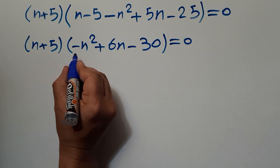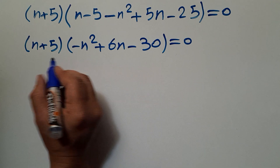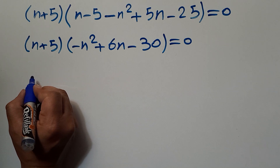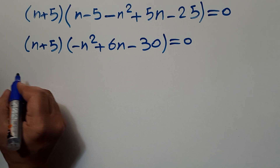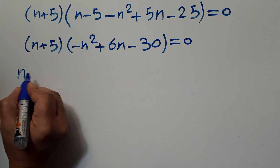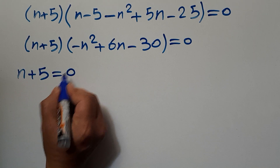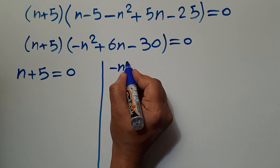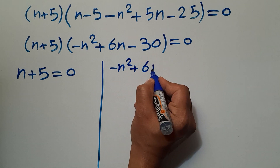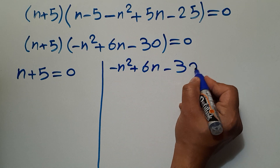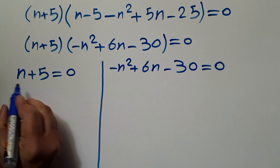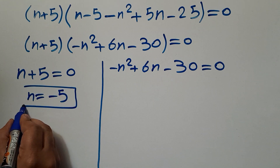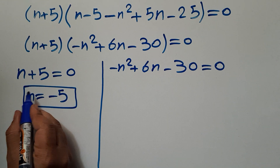Here the product of two terms is equal to 0, so either the first term is 0 or the second term is 0. Either n plus 5 equals 0, or negative n squared plus 6n minus 30 equals 0. From the first factor, n equals negative 5. This is our first value for n.